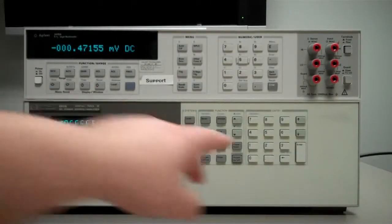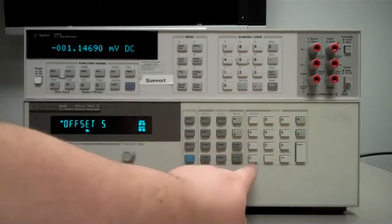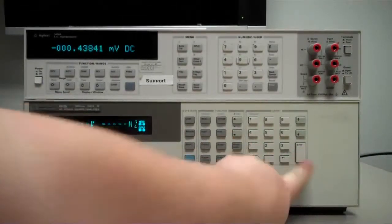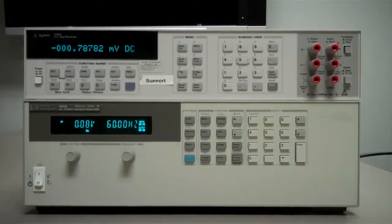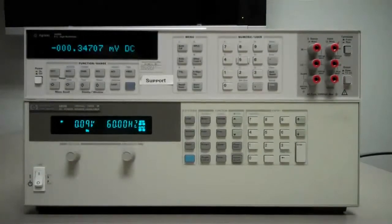We're going to set this offset to 50 volts. Hit 5, 0 and then enter. Now our DC offset is set to 50 volts.